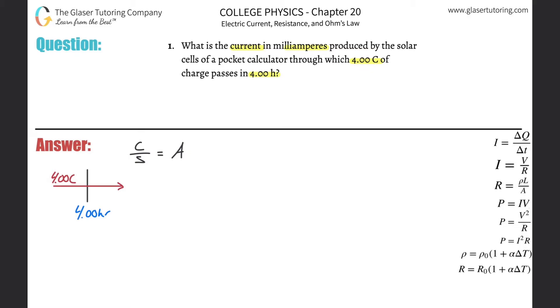So how do we do that? Well, the current formula is going to be equal to the change in the charge passing a particular point divided by the change in that time, or just charge per time - you can think of it like that, just like we just discussed. And all I'm going to do now here is plug in the values.